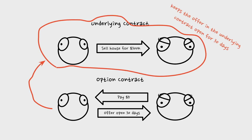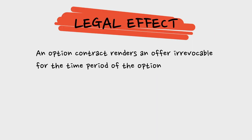The subject matter of Bob's promise is that offer for the underlying agreement. The effect of the option contract is to keep open Bob's offer to sell his house for $300,000 for a period of 30 days. Broadly stated, the option contract renders the offer in the underlying contract irrevocable for the time period of the option — in our example, 30 days.